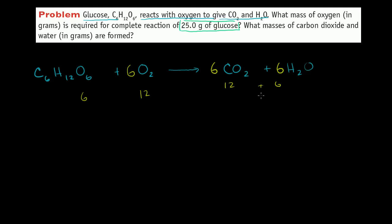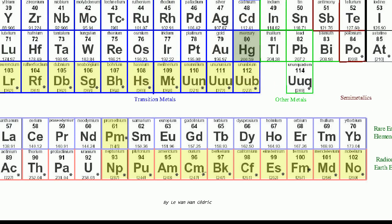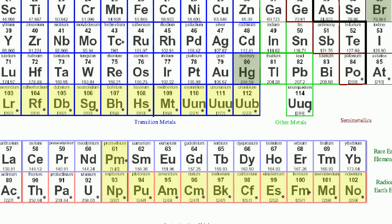The next thing we want to do is figure out how many moles of the reactant we have. They're telling us we have 25.0 grams of glucose. Let's figure out the grams per mole of a glucose molecule. Since everything here deals with carbons, oxygens, and hydrogens, let's look up their atomic weights — at some point you might want to memorize them. Credit to Levon Han Cedric for the periodic table I'm using, obtained from Wikimedia under a Creative Commons attribution license.